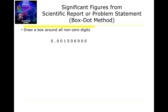So how do we determine how many significant digits a number has? We can do it one of two ways: either memorize all the rules, which is challenging, or we can use what's called the box-dot method. This is a foolproof method that works for every single question you could get.